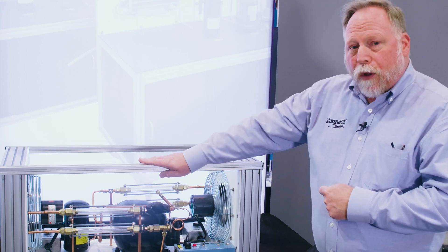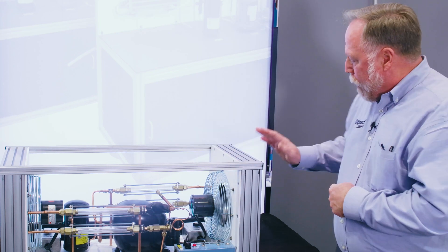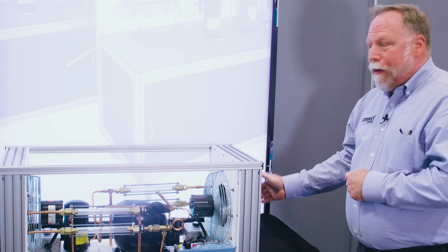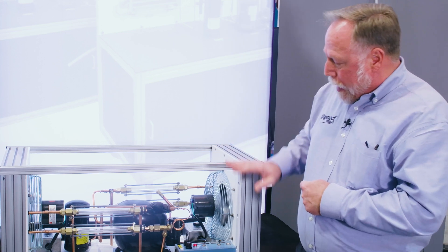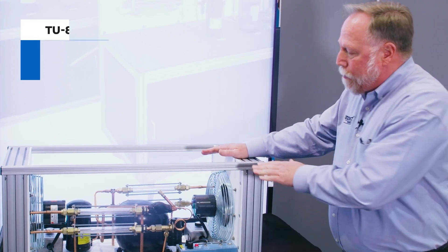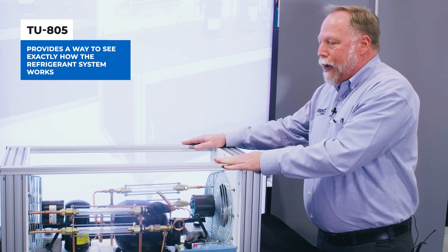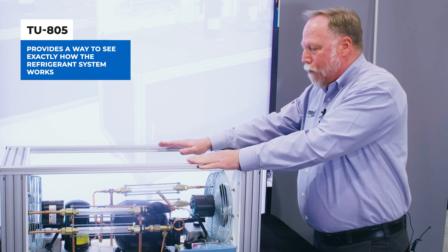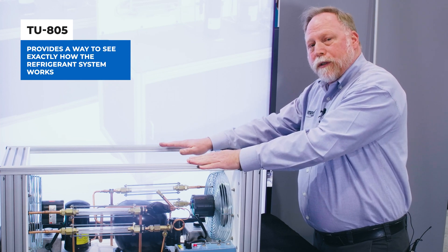So we've got airflow readings. You can measure velocity as well as CFM out of each of the coils. And you've also got the electrical side to it. And of course you got the refrigerant. And the biggest thing about this is that we've got a way for them to see right here in front of them exactly how the refrigerant system works.